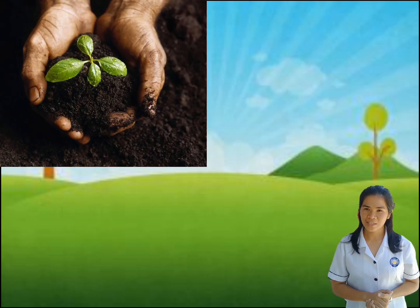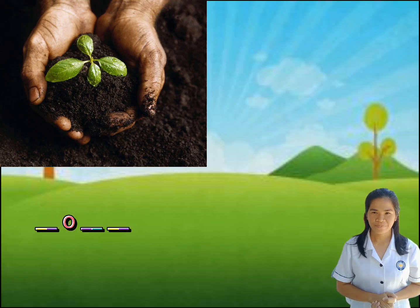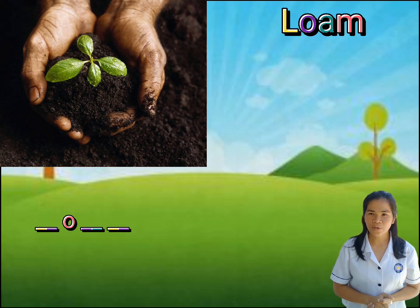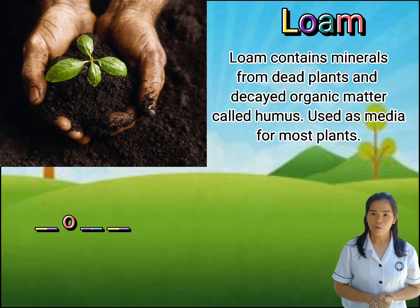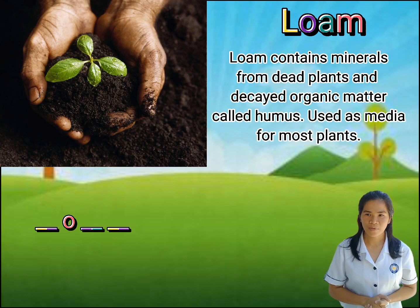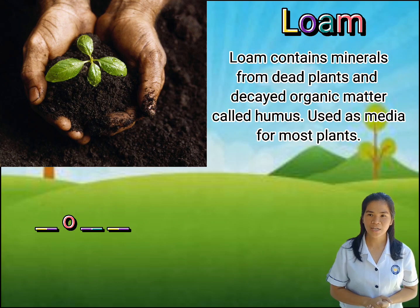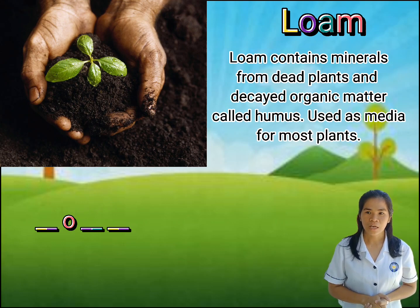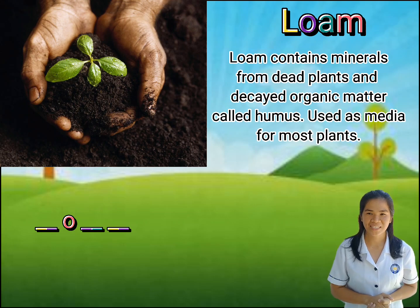Take a look at the third picture. Loam. Very good. Loam contains minerals from dead plants and decayed organic matter called humus. It is used as media for most plants.